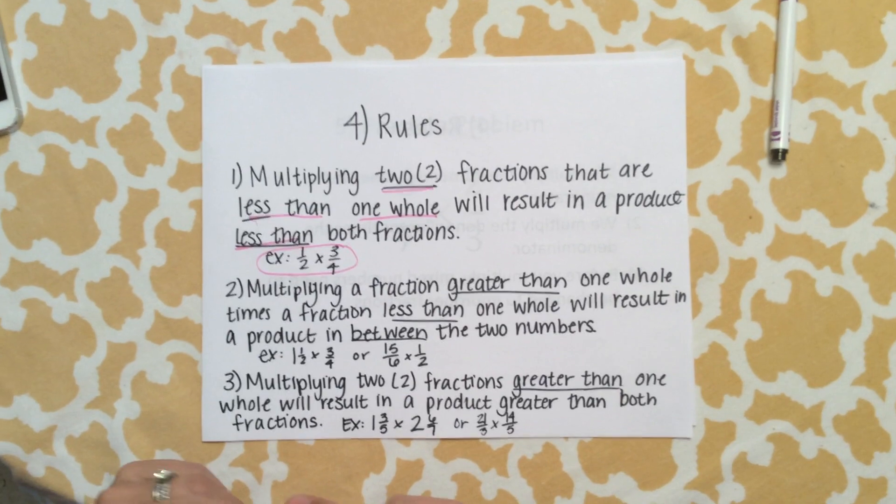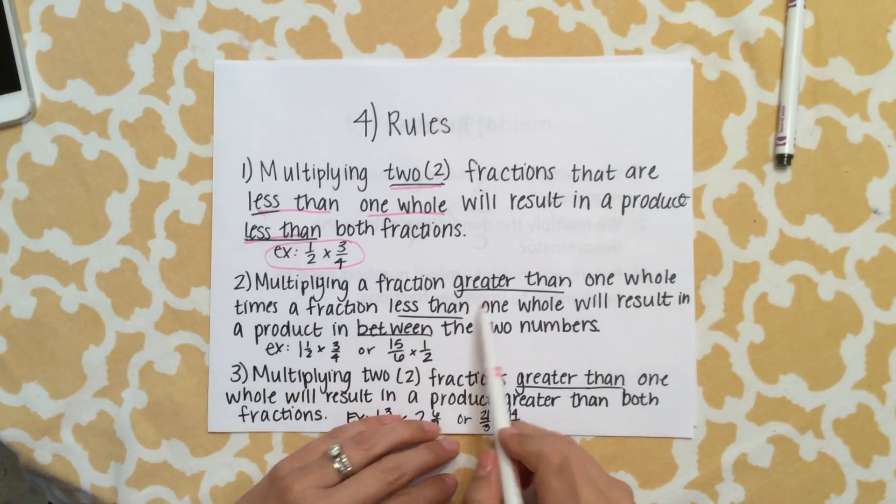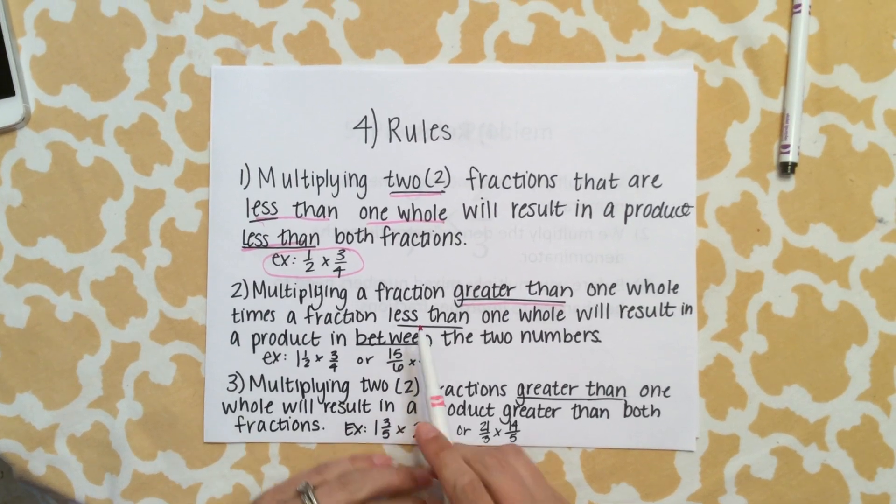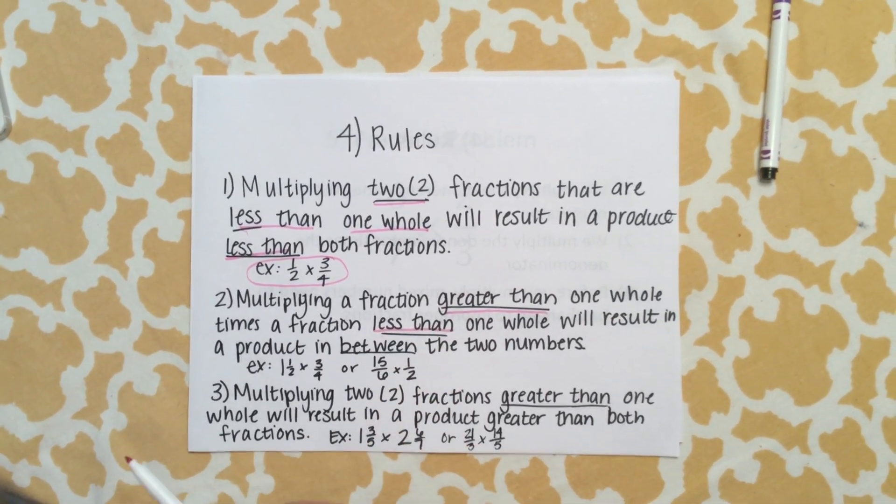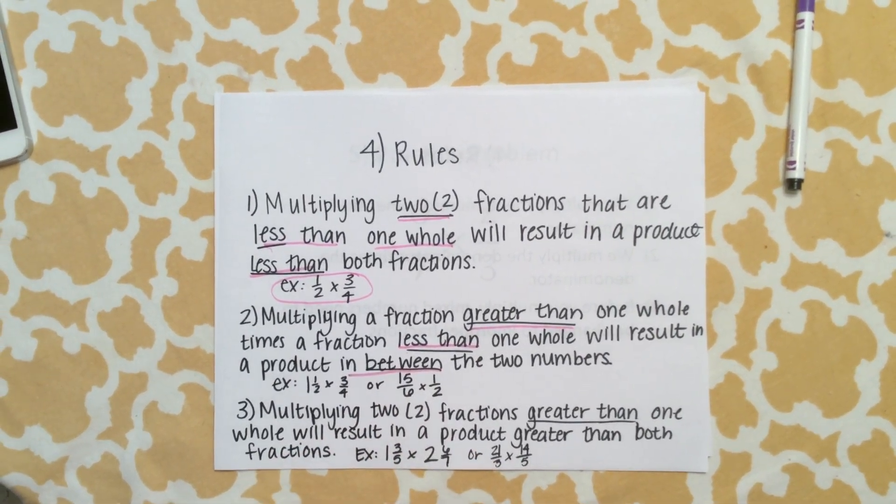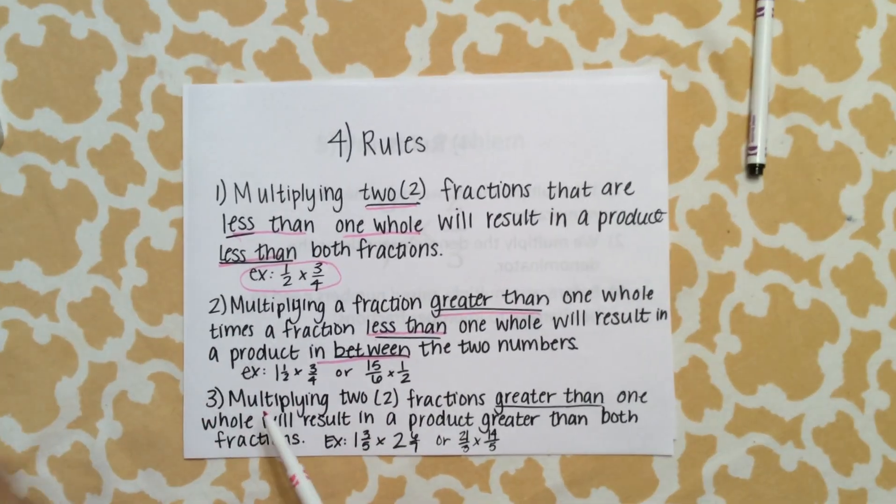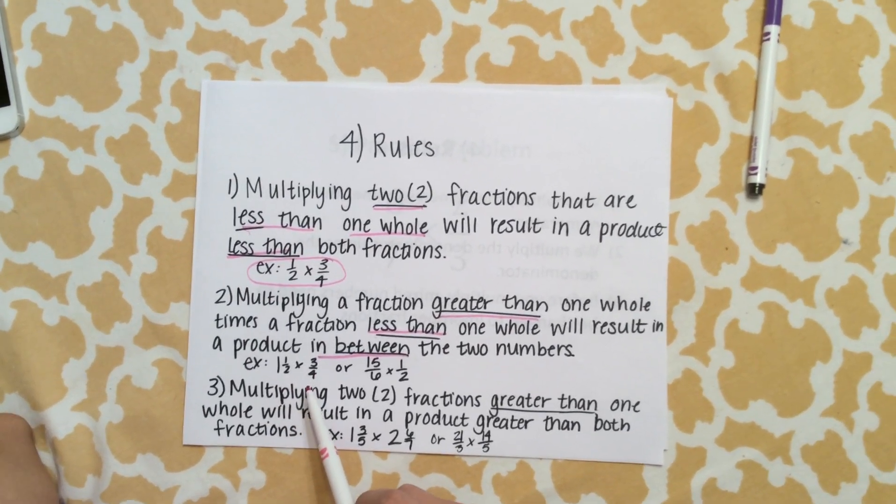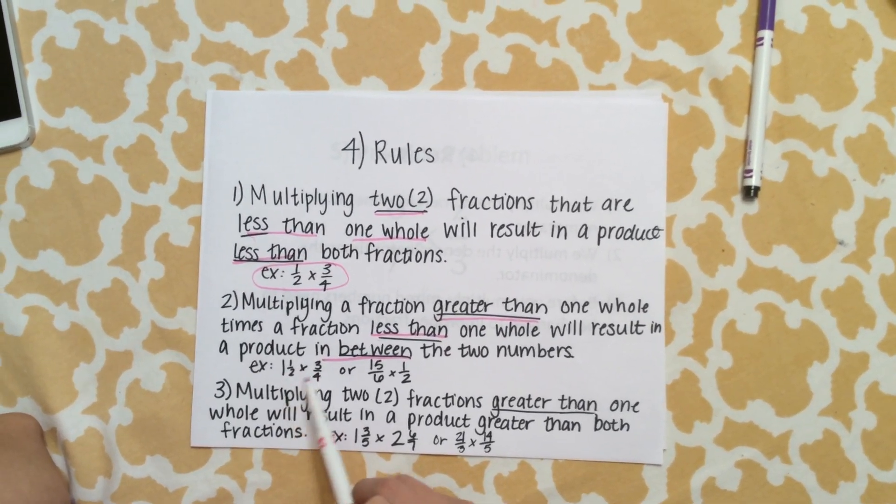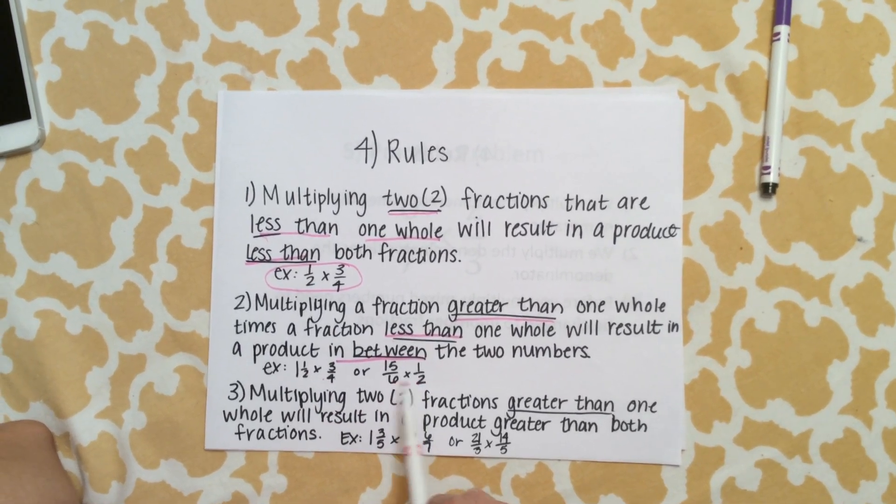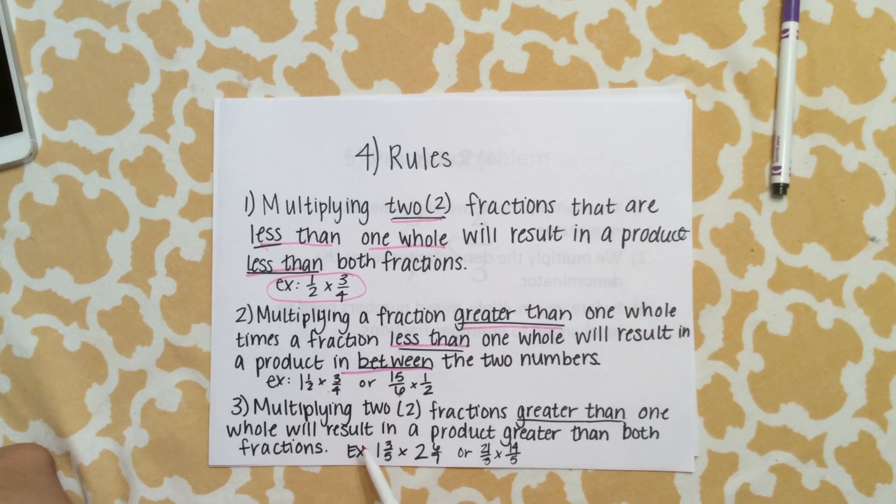The second rule: multiplying a fraction greater than one whole times a fraction less than one whole will result in a product in between these two numbers. We have two examples: 1 and 1/2 times 3/4, the answer will be in between these two numbers, and 15/6 times 1/2, the answer will be in between these two numbers.